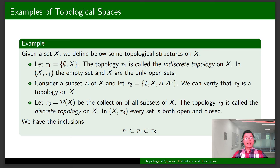Based on their definitions, we have the following inclusion: τ₁ is weaker than τ₂ and τ₂ is weaker than τ₃. In fact, τ₁ is the weakest topology on X.